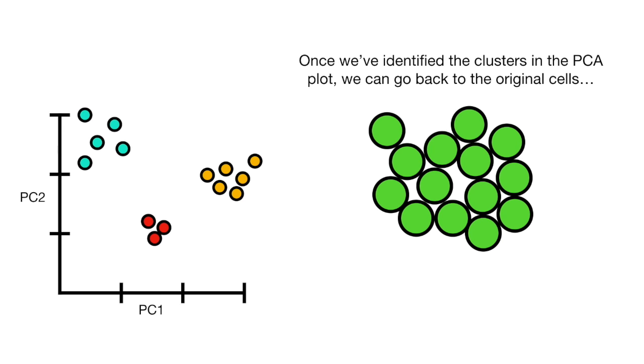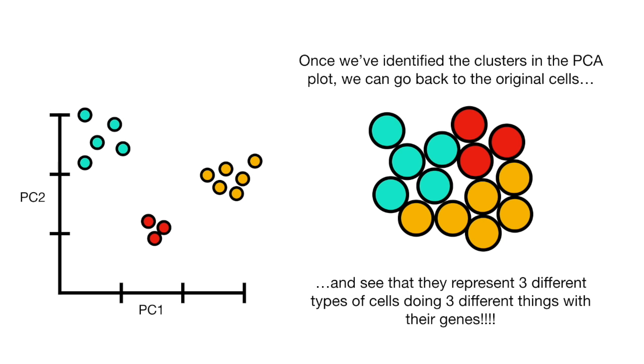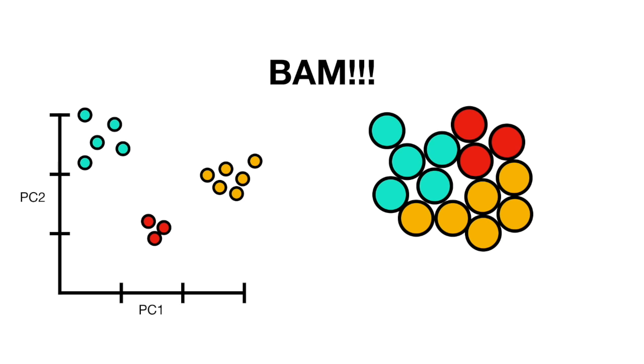Once we've identified the clusters in the PCA plot, we can go back to the original cells and see that they represent three different types of things with their genes. Bam!